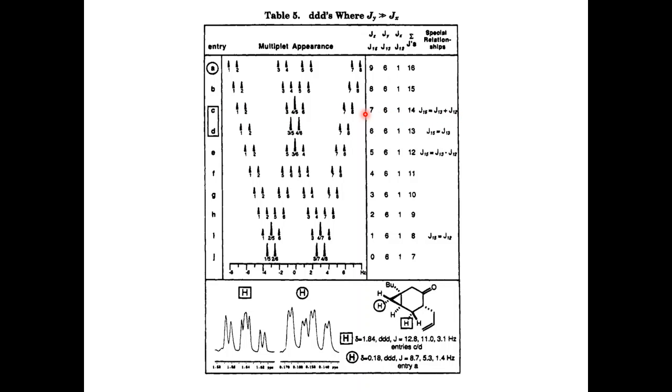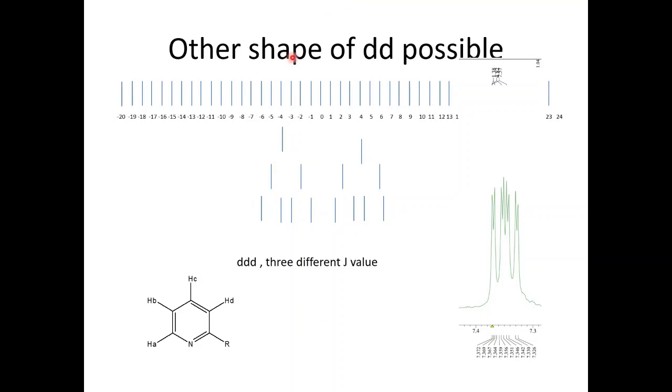In this tutorial I will focus on this type of system which has eight peaks. This is a typical shape of, sorry, this is a doublet of doublet of doublet.